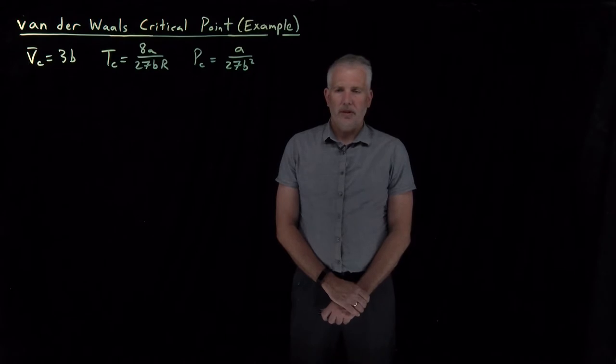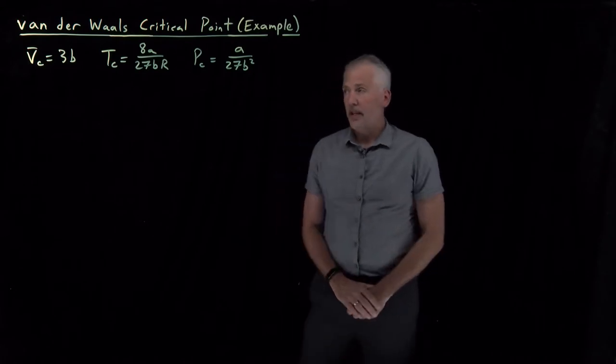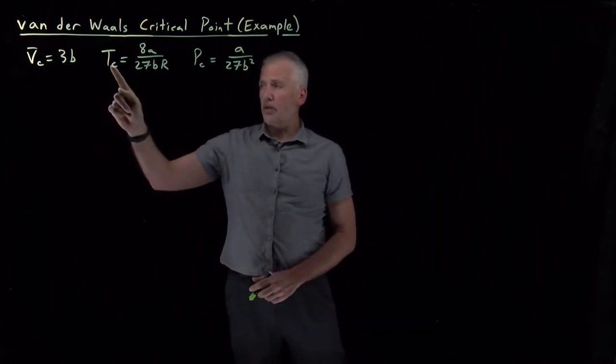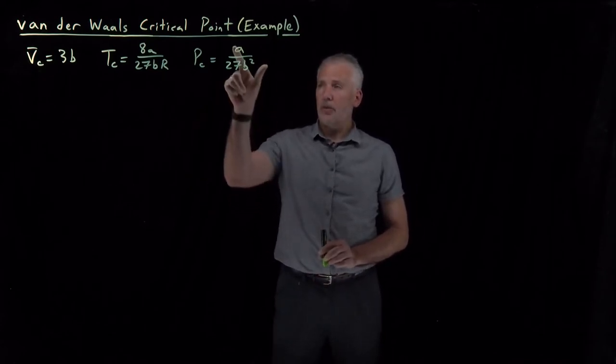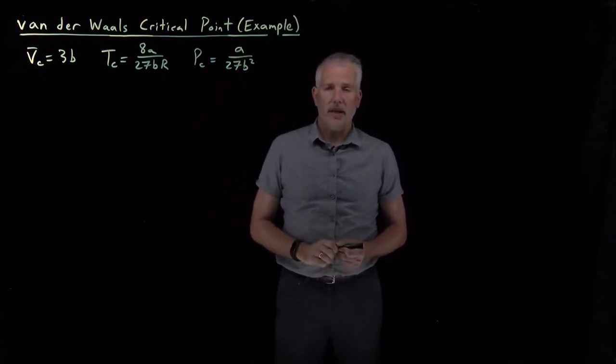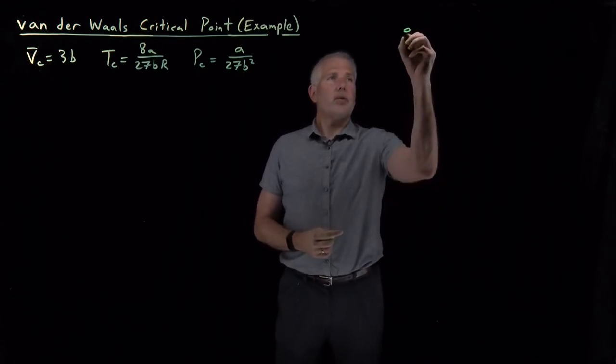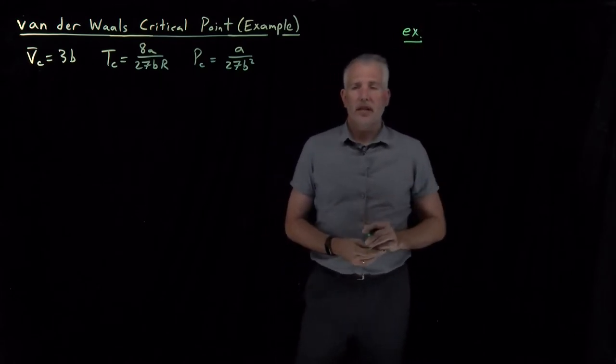Since the van der Waals equation can predict a critical point for gas, we can determine the critical properties of the gas - its critical molar volume, temperature, and pressure - directly from the van der Waals constants for the gas. To see how that works, let's take an actual gas.